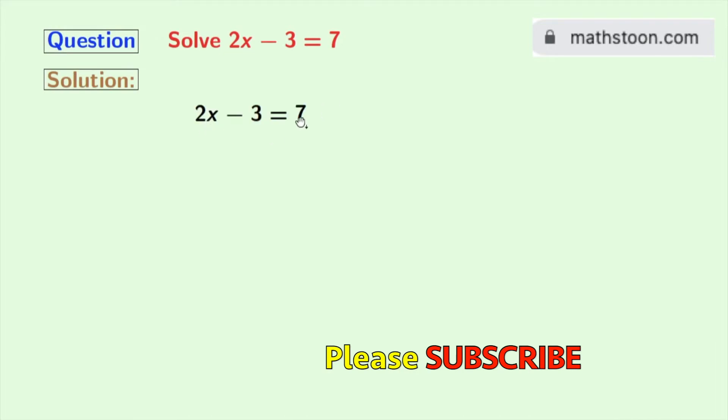Look, this is our equation. Now we will add 3 to both sides. Doing so we get 2x minus 3 plus 3 is equal to 7 plus 3.